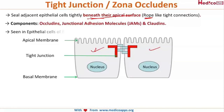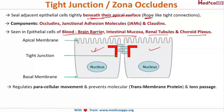Tight junctions are mostly seen in the epithelial cells of the blood-brain barrier, which is highly selective about what substances can enter. Other locations include intestinal mucosa, renal tubules, and the choroid plexus. The function of tight junctions is to regulate paracellular movement — that is, side-to-side movement of substances — and to prevent molecular and ionic passage.